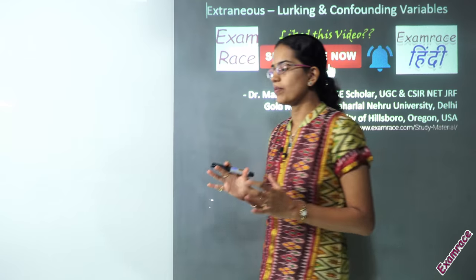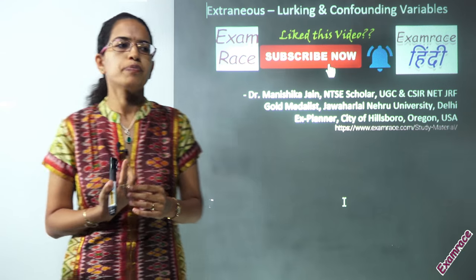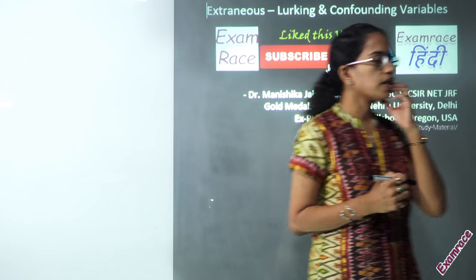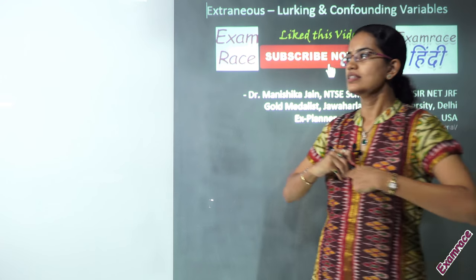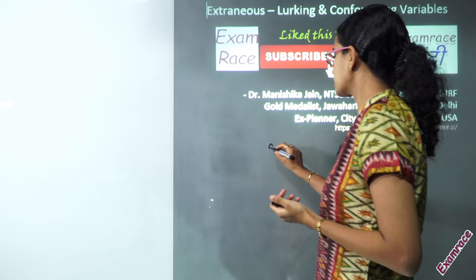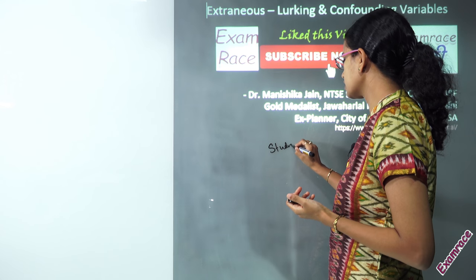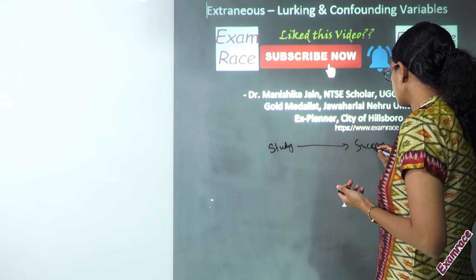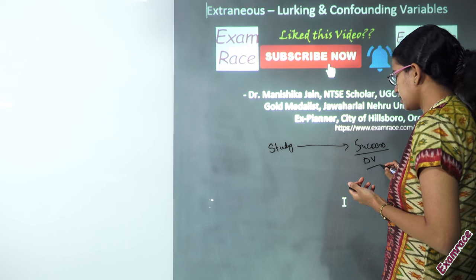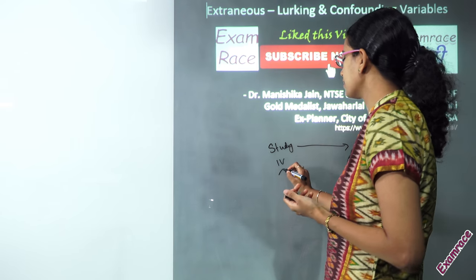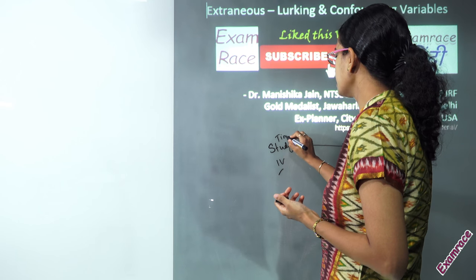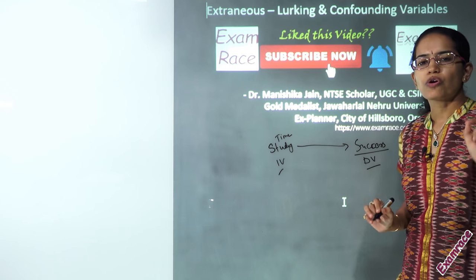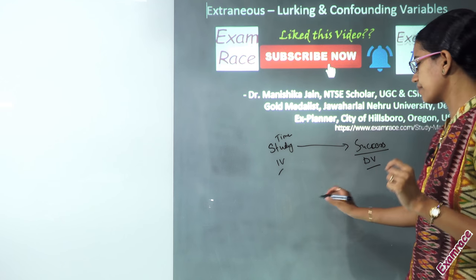Let's talk about what a confounding variable is. Consider a study based on study time and the rate of success — the more a student studied, the higher the success rate. In this study, success rate becomes the dependent variable and study time becomes the independent variable.